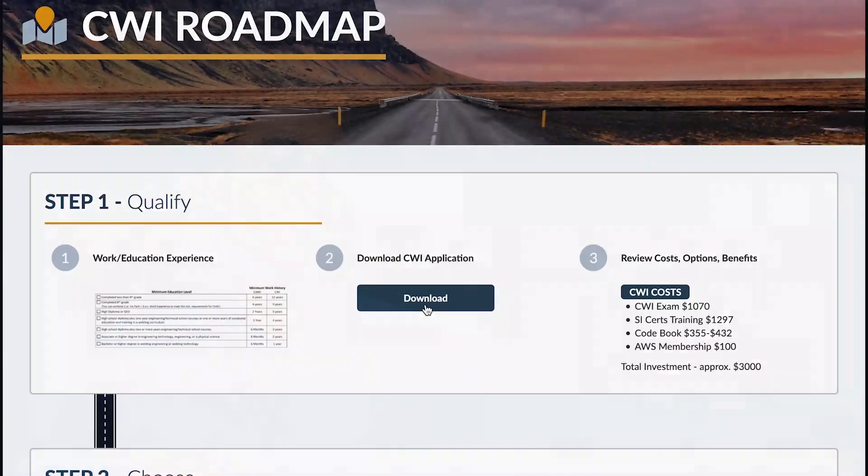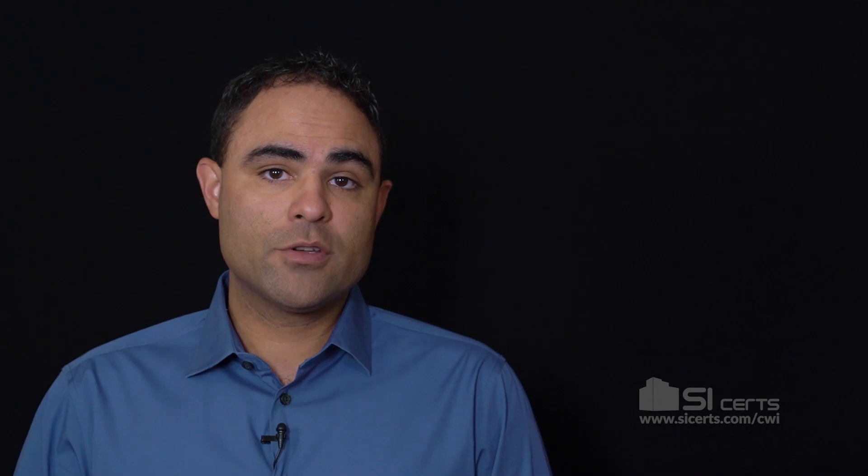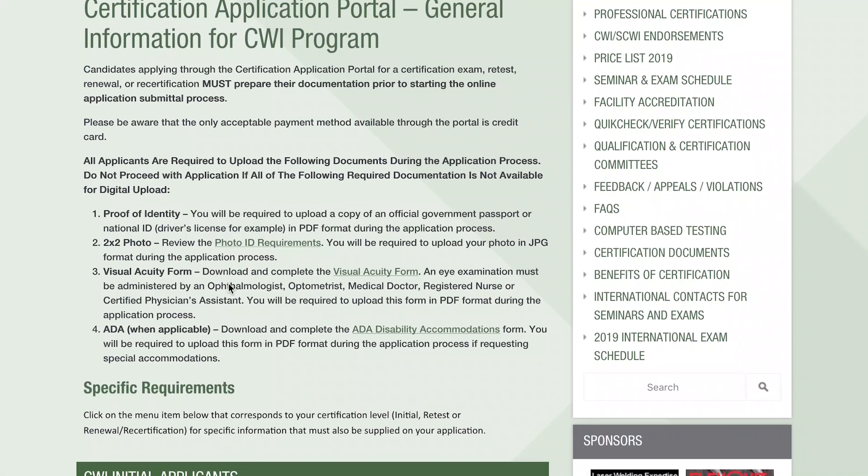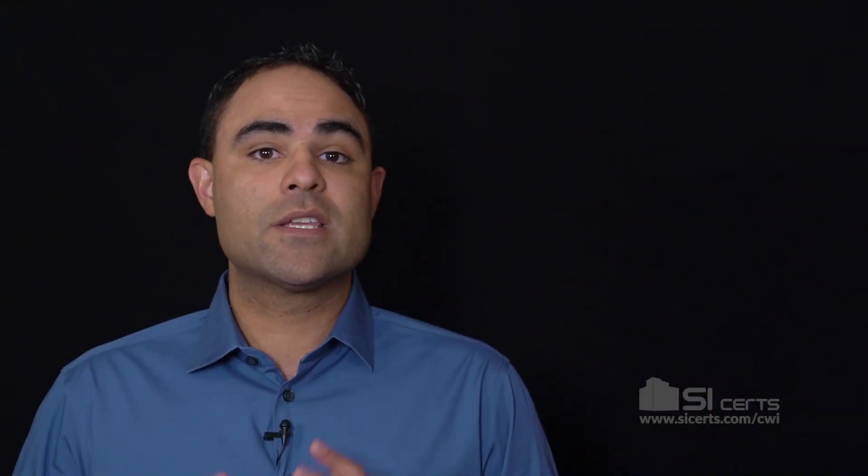After you do this, you can either download the CWI application and fill it out, or complete the application online. In addition to proving your work and education experience, be prepared to submit an official ID, a passport-like photo, along with the results of a specific type of eye exam and color blindness test.